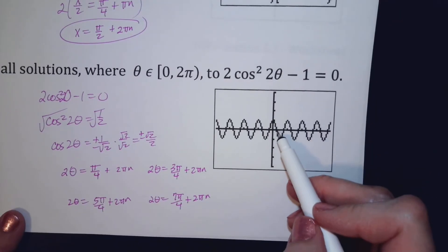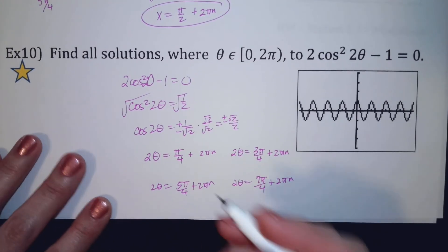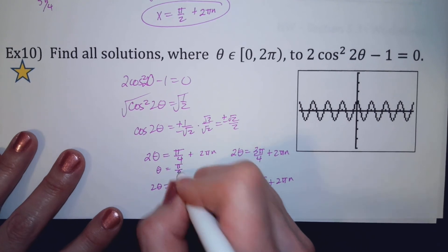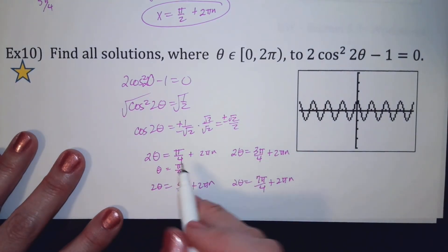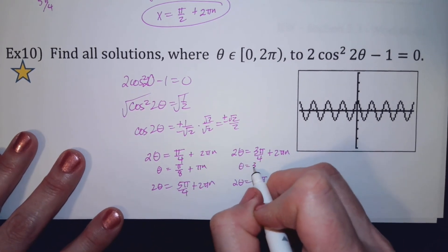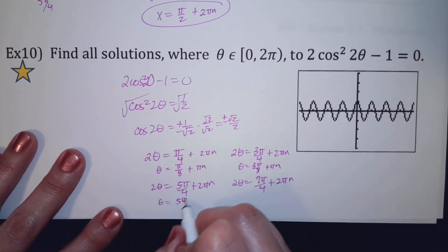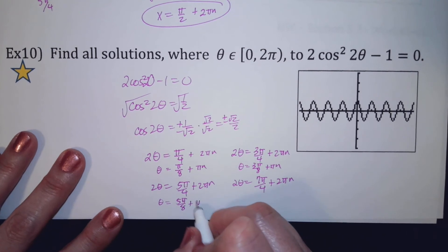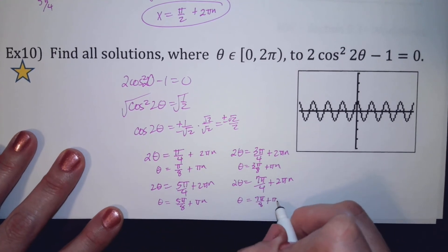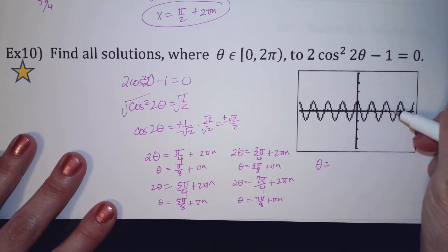The graph shows there should be 8 answers. I only have 4 so far. So divide everything by 2: theta equals pi over 8 plus pi·n. This one becomes 3pi over 8 plus pi·n. This one becomes 5pi over 8 plus pi·n. And this one becomes 7pi over 8 plus pi·n.